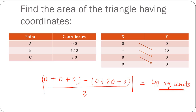Let me repeat the process. First, write down all the x coordinates of A, B, C and then again A. Write down all the y coordinates of A, B, C and then again A. Multiply x coordinates crosswise: 0 with 10, 4 with 0, 8 with 0. Also multiply y coordinates crosswise: 0 with 4, 10 with 8, and 0 with 0. Add the respective products of x, add the respective products of y, subtract both, divide by 2, and the modulus value is the area. This method works not only for triangles, but also for quadrilaterals, pentagons, hexagons — any regular polygon.